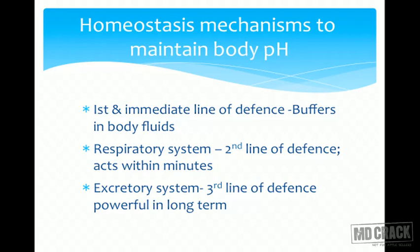The second line of defense is the respiratory system. The respiratory system evolves out CO2 — most volatile acids can ultimately be converted into CO2, so the buffers donate H+ ions which are converted into CO2 and exhaled. This second line of defense comes into action within minutes by changing the rate of ventilation. The third line — the excretory system — is slower but the most permanent solution.